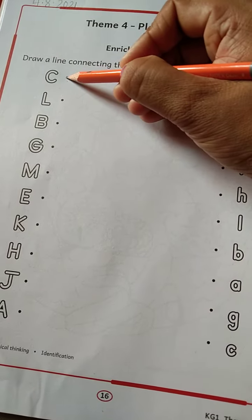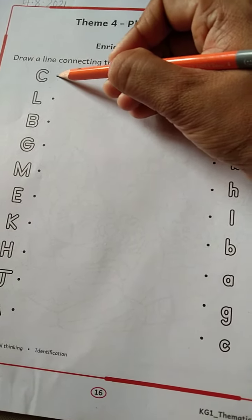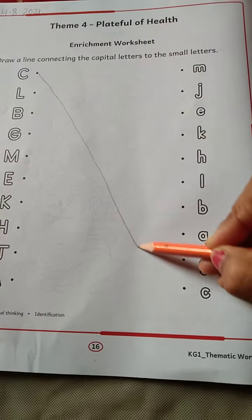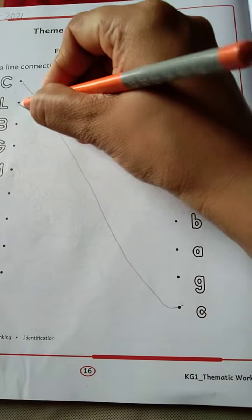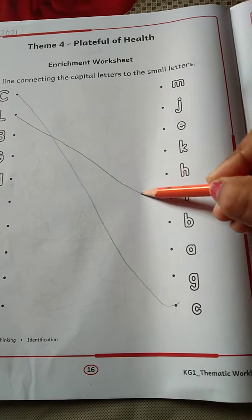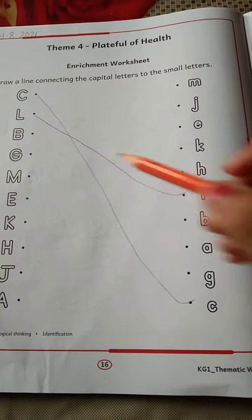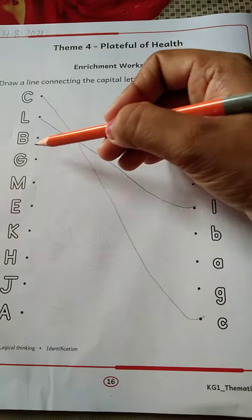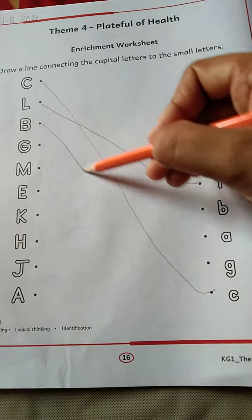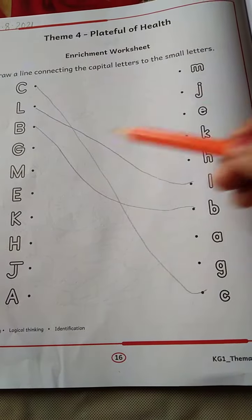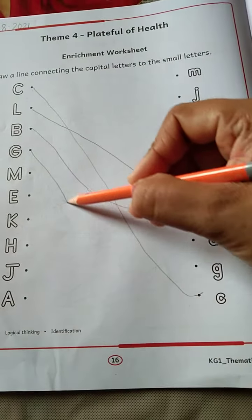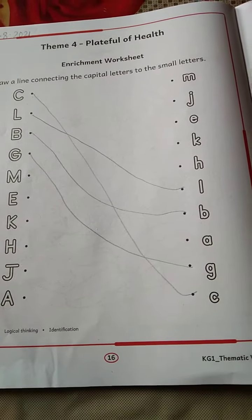So this is C. K match with k. L match with l. B match with b. G match with g.